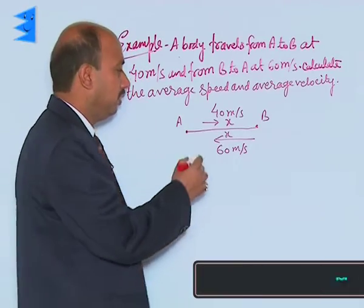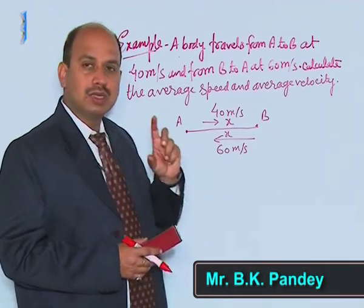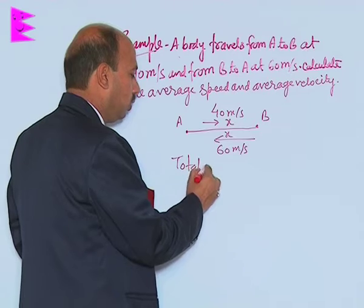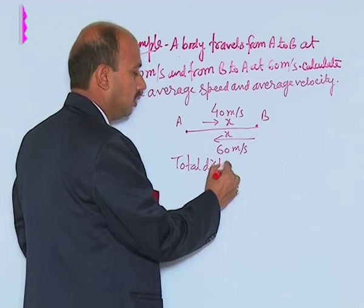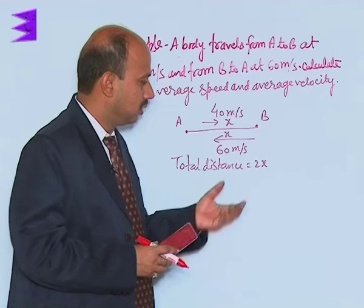So, for calculating average speed, we need the total distance. That means going A to B, B to A. The total distance is 2x. So we can write here now total distance is equal to 2x, that means total length of the path covered.